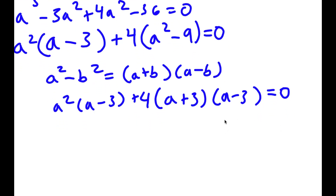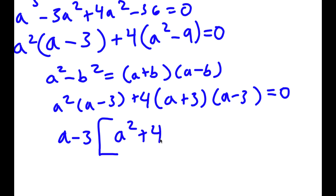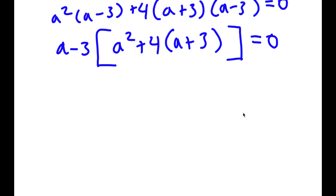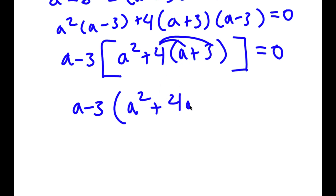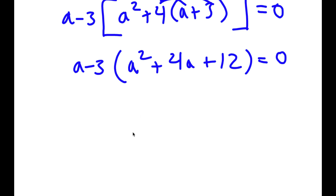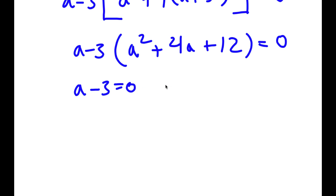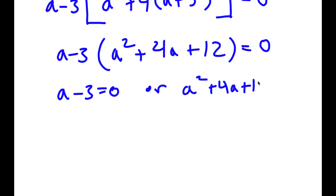So now I'm going to factor out a minus 3 from the left hand side. I have a minus 3 times a squared plus 4 times a plus 3. Distributing the 4, I get a minus 3 times a squared plus 4a plus 12, and this is equal to 0. Now this gives me two equations: a minus 3 equals 0, or a squared plus 4a plus 12 equals 0.